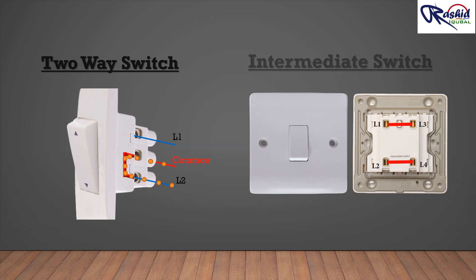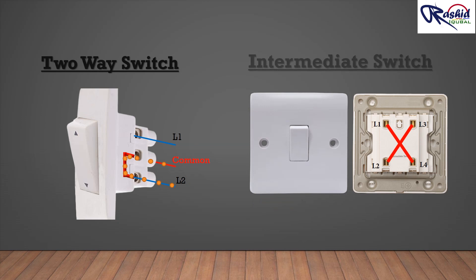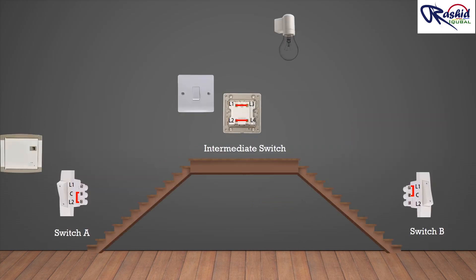In this video we're going to learn how to control a light fitting with three switches. Let's see an example of controlling this light fitting using three switches. Now let's start wiring. Here we need to connect three switches together — switch A and switch B as two-way switches, and in the middle one is the intermediate switch.